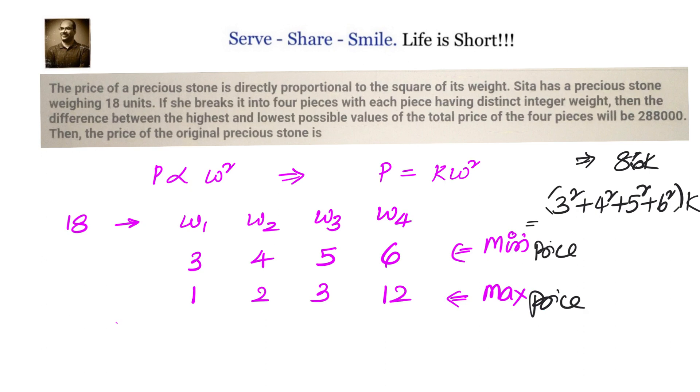And when you go to the maximum price, you have 1 square plus 2 square plus 3 square plus 12 square. And that is 144 plus 9, 153 plus 2 plus 4 plus 1, 158K. So the maximum price we got is 158K and the minimum price we got it as 86K.